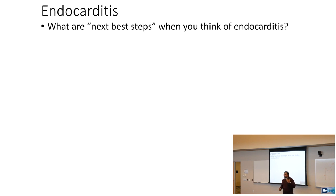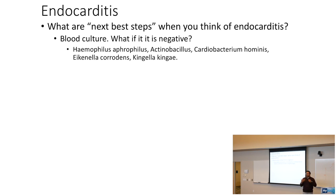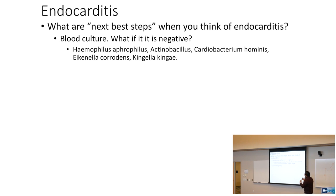When thinking about fever plus a murmur, the next best steps are a blood culture and an echocardiogram. If the blood culture is negative, think about the HACEK organisms — Haemophilus, Actinobacillus, Cardiobacterium, Eikenella, and Kingella — which cause culture-negative endocarditis. Echocardiography helps visualize vegetations on the valves.